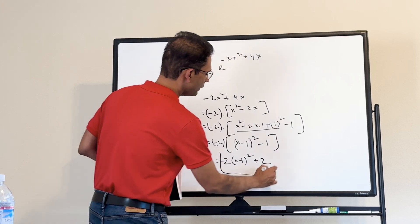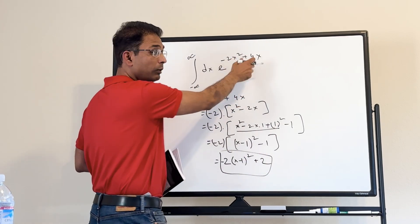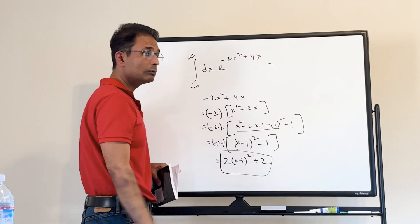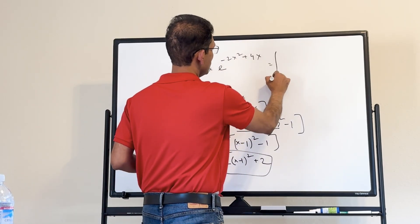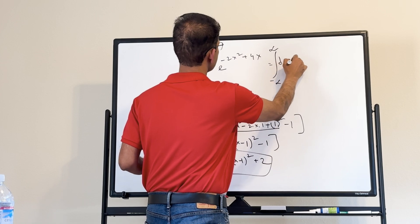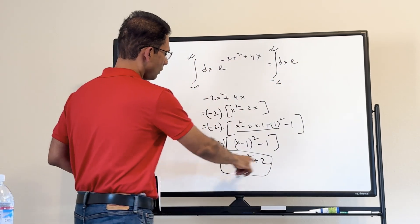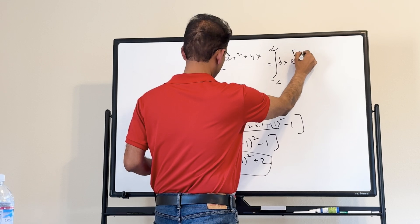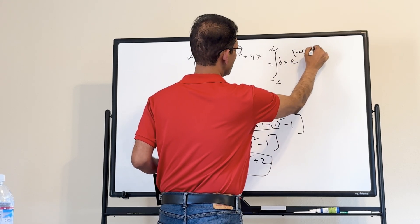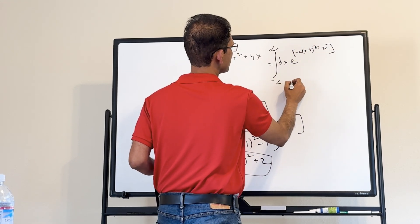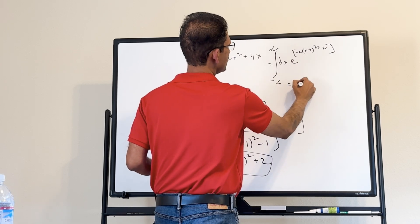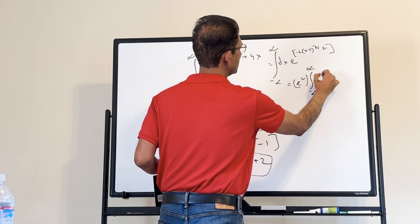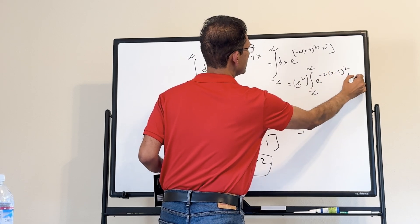Plugging this completed square expression back into the integral, we get: minus infinity to plus infinity of e to the power [minus 2(x minus 1) squared plus 2] dx. The constant term e squared comes out of the integral, leaving: e squared times the integral of e to the minus 2(x minus 1) squared dx.